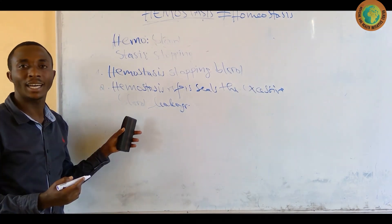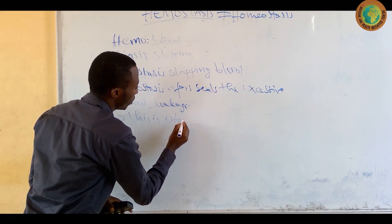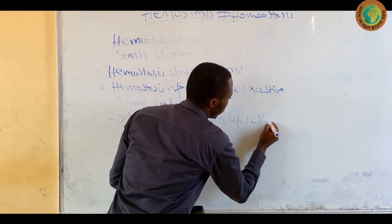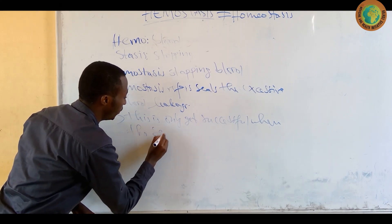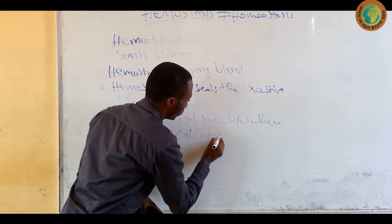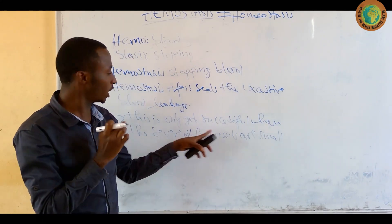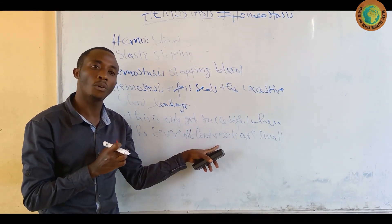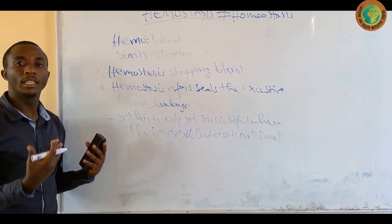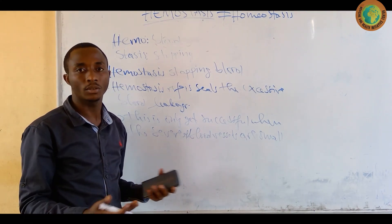Friends, as you have seen, hemostasis is the process by which the body seals excessive bleeding, of course, of blood leakage from the circulatory system of the body. You have to keep in mind that this is only getting successful when the severed or damaged blood vessels are small. This process cannot succeed when the blood vessels that have broken are larger blood vessels. When larger blood vessels are damaged, it needs medical intervention like surgery and suturing.